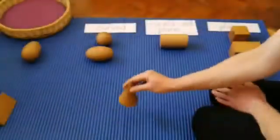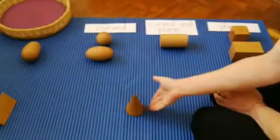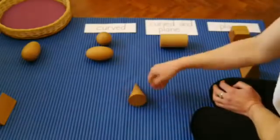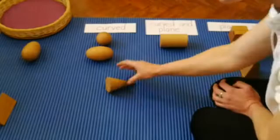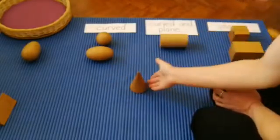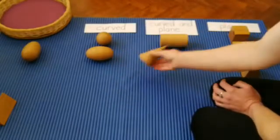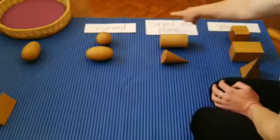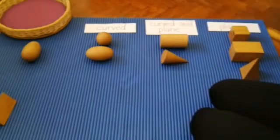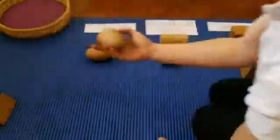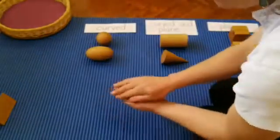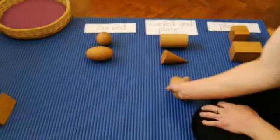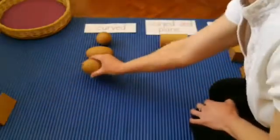What about our cone? Hmm, that will sometimes roll, but sometimes it doesn't. The cone is curved and plain. What about our ovoid? Our ovoid is curved.